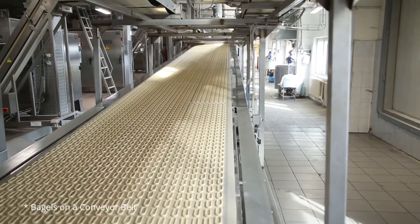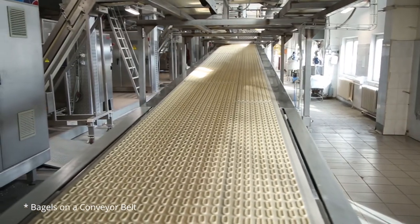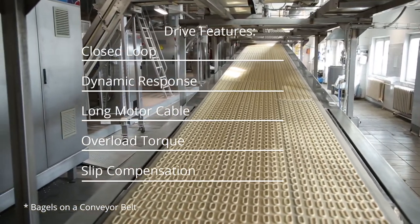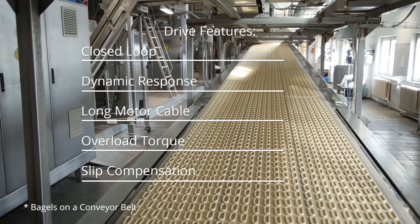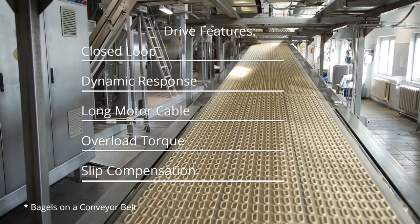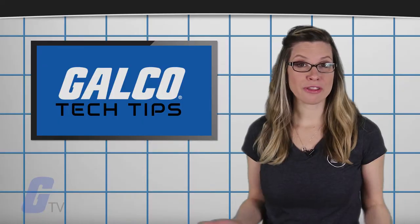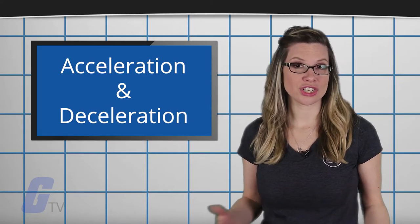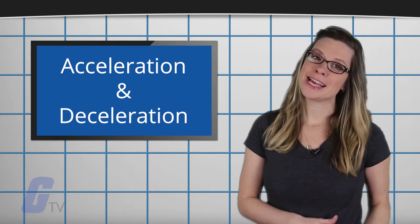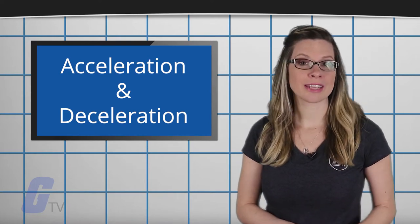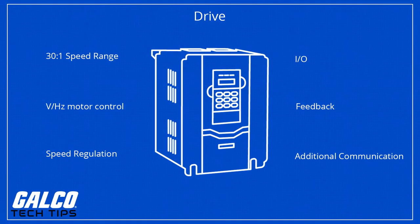For ideal belt loop operation, you will likely want your drive to feature closed loop, dynamic response, long motor cable length, overload torque, and slip compensation. Other features such as long acceleration and deceleration may also be necessary depending on your particular application. Your drive should have a 30 to 1 speed range, volts hertz motor control type, and speed regulation.